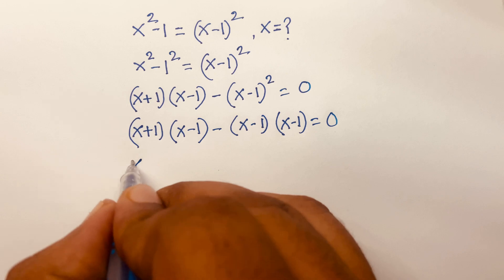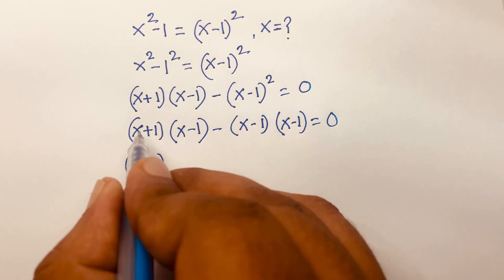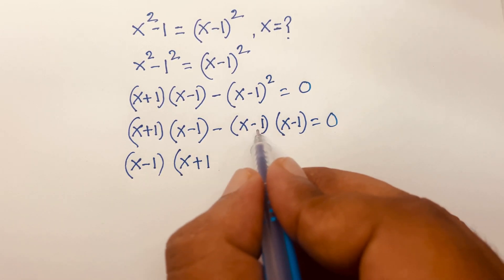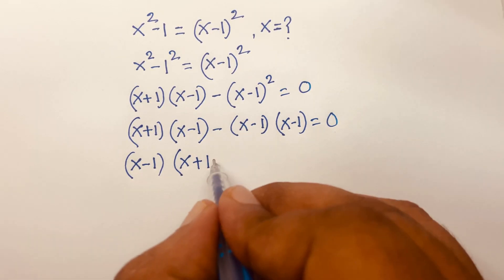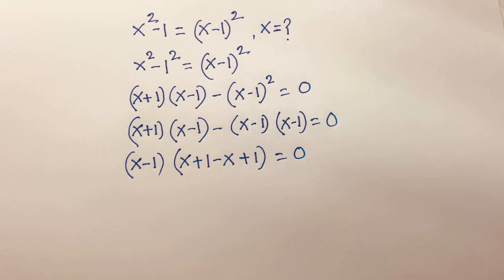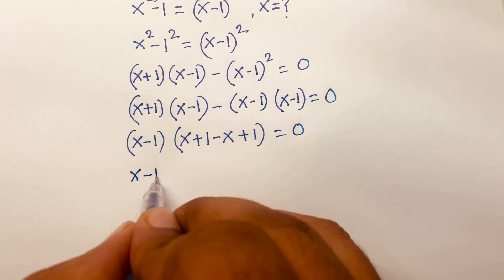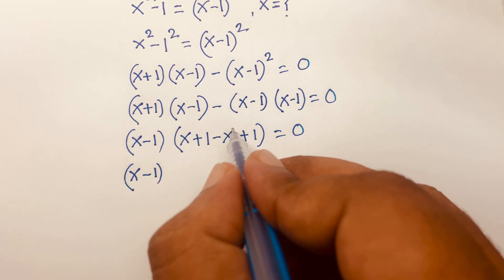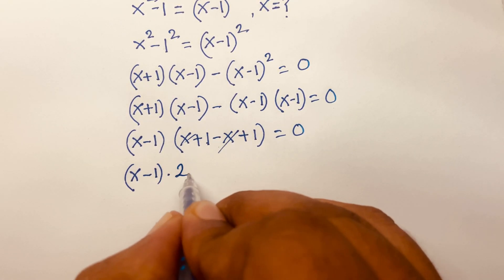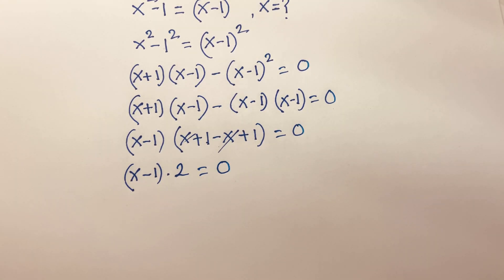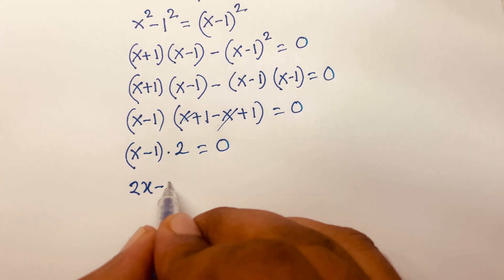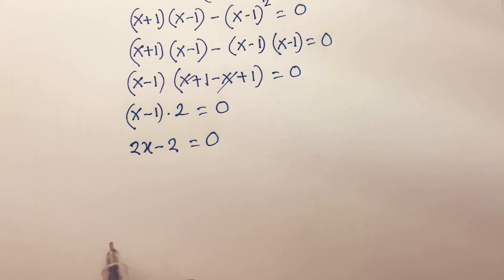I can see that (x-1) is common here, so factoring it out: (x-1) times [(x+1) minus (x-1)] equals 0. That simplifies to (x-1) times [x plus 1 minus x plus 1], and x cancels, leaving (x-1) times 2 equals 0.